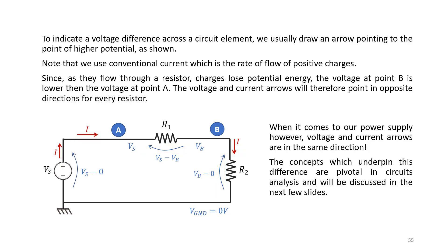When it comes to the power supply, however, the voltage and current arrows are in the same direction. This is a pivotal concept in electric circuits because it allows us to distinguish elements that absorb power from elements that produce power.